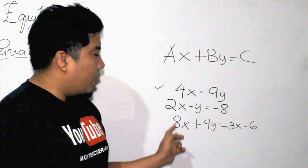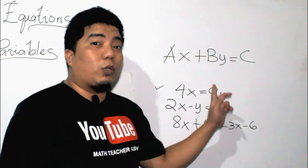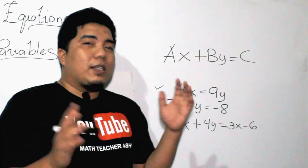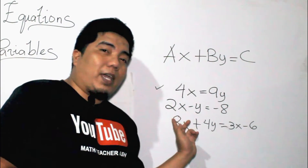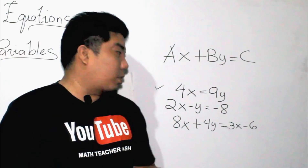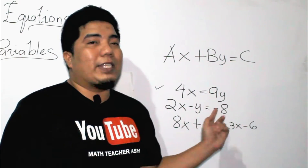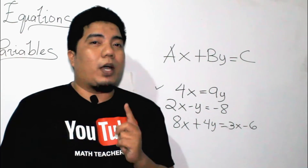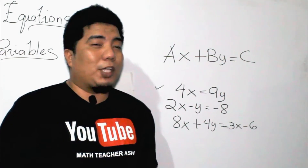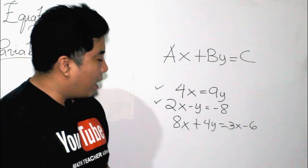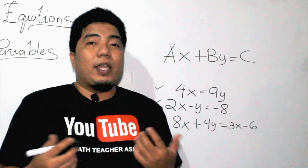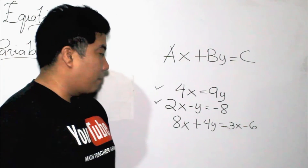Now, we have also here 2x minus y is equal to negative 8. Since there are x and y, that is two variables, and the highest exponent is 1. Therefore, this is a linear equation. We also have here 8x plus 4y is equal to 3x minus 6.